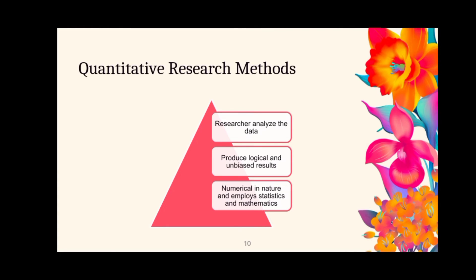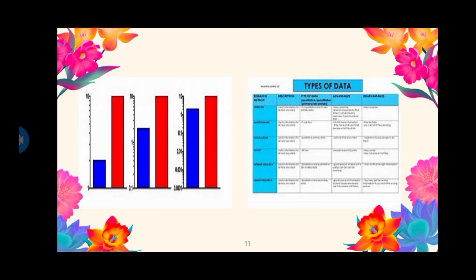In terms of purpose, quantitative research method aims to develop mathematical models, hypotheses, and theories that pertain to the quantifiable phenomena under investigation. Quantitative research method is numerical in nature and implies statistics and mathematics in the interpretation of data. Research papers that employ a quantitative research method are replaced with tables and graphs.